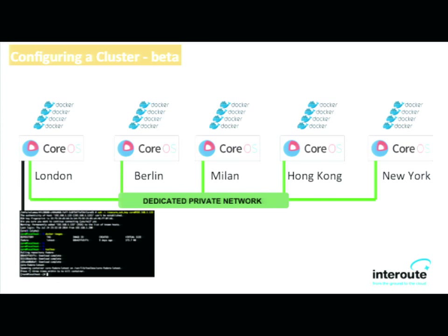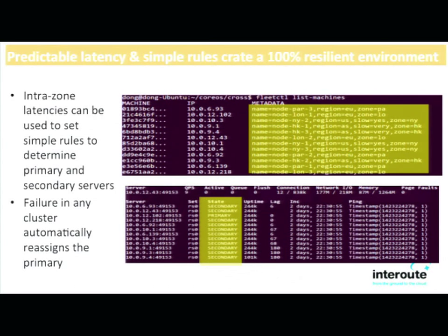So you've built a globally scaled-out platform really easily. On top of this, you can take the latency between each zone — which on a private network is far more steady than you'd get on the internet — and define rule sets about which is the primary, which is the backup, and which users belong to which local zones. Using our built-in firewalls and load balancers, you can serve customers in Hong Kong from Asia, send users from the Americas through our New York or Los Angeles connection, all pulling back into a MongoDB instance and accessing that data globally through all zones tied together.